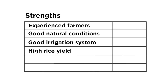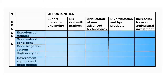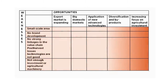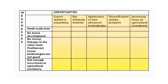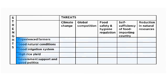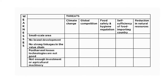First, each participant rates each strength according to how important it is in helping the rice sector benefit from each opportunity. Next, each participant rates each weakness according to how important it is in preventing the rice sector from benefiting from each opportunity. Next, each participant rates each strength according to how important it is in helping the rice sector cope with each threat. Finally, each participant rates each weakness according to how important it is in preventing the rice sector from coping with each threat.